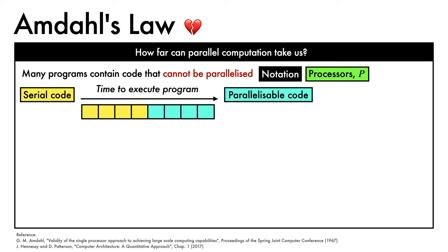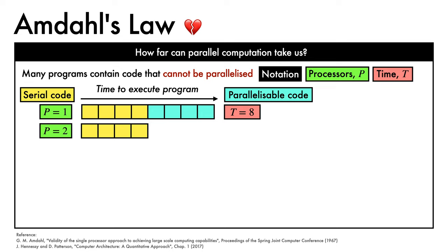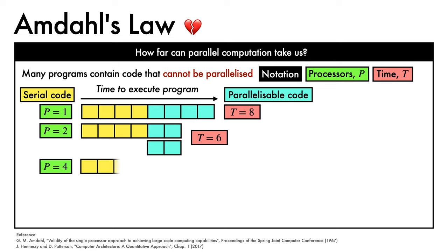Let's suppose we have a program where yellow blocks must be executed serially and turquoise blocks can be parallelized, with p denoting the number of processors and t the time taken. When we have one processor, the time taken is 8, since everything is run serially. With two processors, we still run all the serial code on one processor but split the parallelizable code across two, giving a total time of 6. With four processors, the total time is 5. This doesn't seem great.